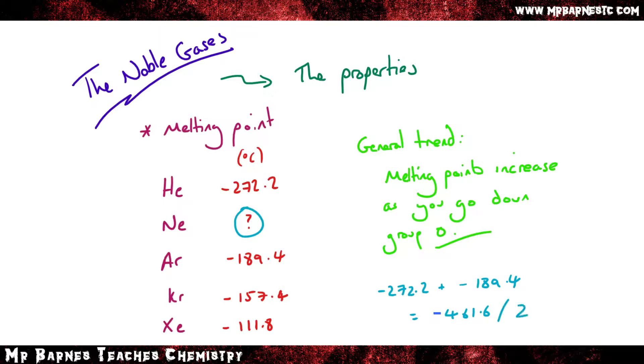So in this case it's minus 461.6 divided by two gives me minus 230.8 and the actual melting point is minus 248.6. So it's pretty close.